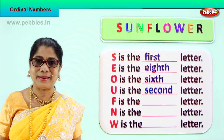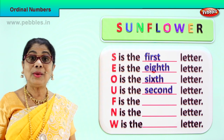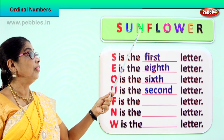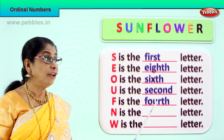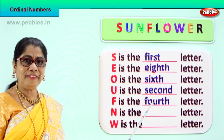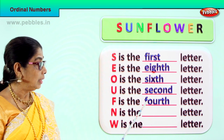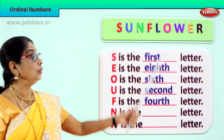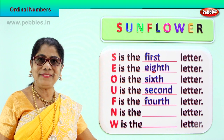Now let's take another letter. In sunflower we have F. F is in what position? First, second, third, fourth. Letter F is the fourth letter. Spell fourth: F-O-U-R-T-H. Fourth. F-O-U-R-T-H. Fourth. Letter F is the fourth letter in sunflower. Good.